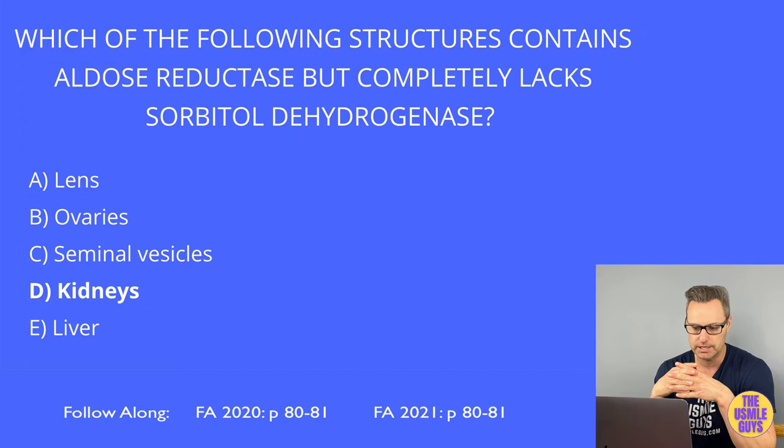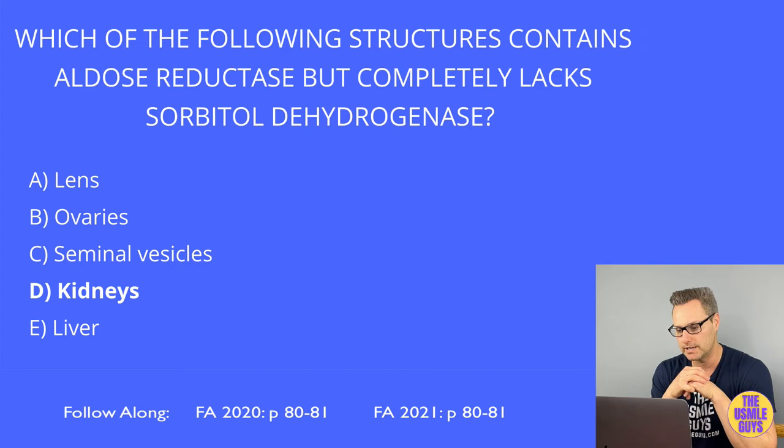Someone with lactase deficiency — lactose intolerant — would have flatulence, bloating, cramping, and potentially osmotic diarrhea. The fix is straightforward: either avoid foods with lactose, or start taking lactase pills.